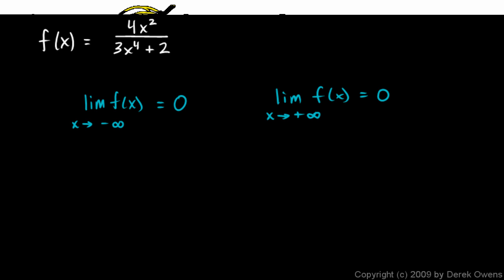If x gets really big in either direction, the denominator gets huge, so the fraction is headed to 0. This function won't have any vertical asymptotes because there's no x value that makes the denominator 0. For the denominator to be 0, 3x⁴ would have to be negative, and x to an even power is never negative.